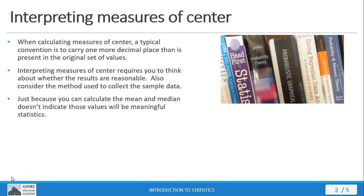Remember when we discussed the mode and said it's the only meaningful statistic when treating nominal data? Well, we've seen before that categorical data can be numerical, and when they're numbers you can calculate a mean and median value, but that doesn't mean that those values have any sort of meaning in the real world. Just because something's numerical doesn't mean it's quantitative data, and just because you can calculate mean and median values doesn't mean they're going to have any sort of significance in the real world.